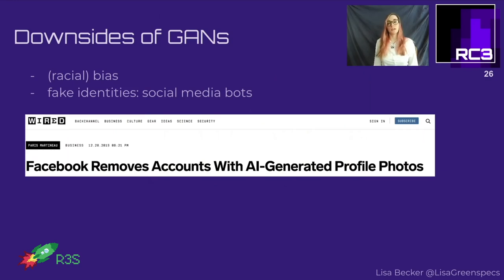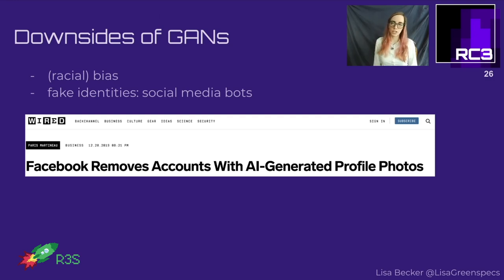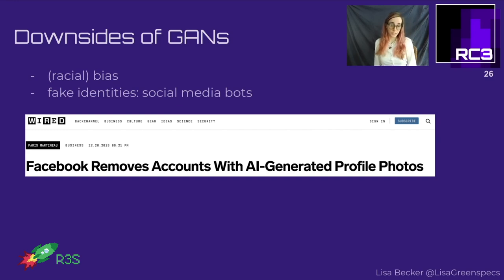Another problem is that GANs can be used to create fake identities. Social media bots are getting more realistic and are used to influence people's political opinions. Facebook removed over 900 accounts spreading pro-Trump propaganda to about 55 million users. Facebook held a deepfake detection challenge in December 2019, and Twitter says they're marking tweets containing fake images. Most detection algorithms are also based on GANs.